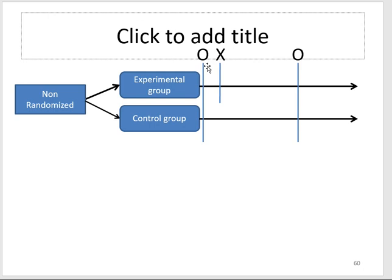You compare the groups on baseline characteristics, and also on your outcome variable if it is measurable at baseline — for example, blood pressure, flexibility, or quality of life. These measures are present at baseline and can be measured. Then you carry out your intervention for the experimental group and do your observation at time two.